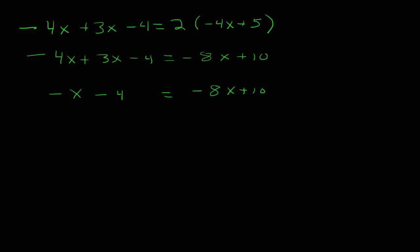So we have the negative x and the negative 8x, and it's dealer's choice as far as which one you want to get rid of. I will get rid of the negative 8x by adding 8x to both sides of the equation. Whatever we do to one side of the equation, we must do to the other side of the equation.